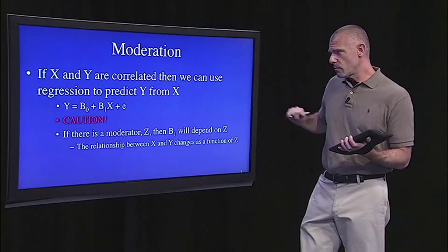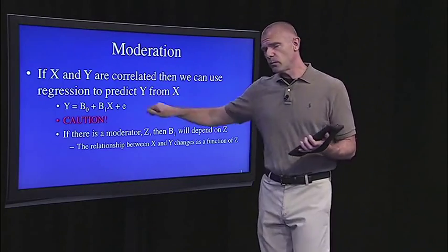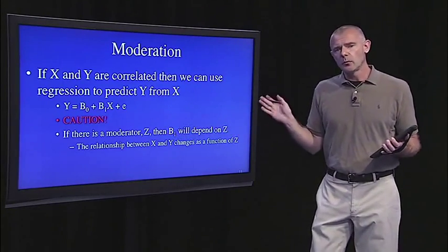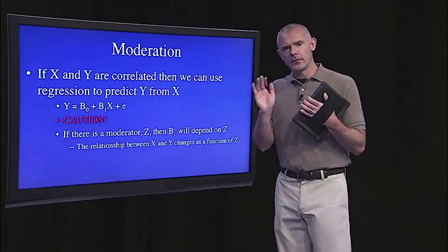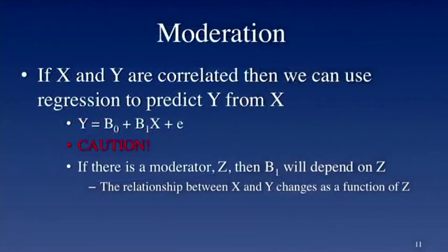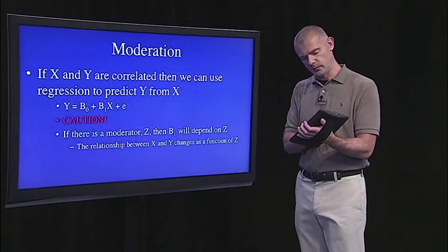And again, remember that in the simple regression equation, B1 is the slope relating X to Y. But beware, if a moderator variable is introduced, and it's a strong moderator, what that means is B1 isn't representative for all values of X. That is, B1 could change for different people depending on where they fall on Z. And we'll see that in the examples.